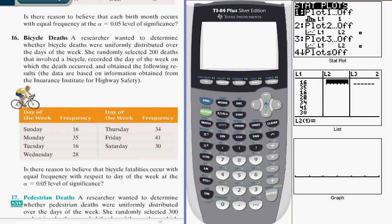I'm going to be looking at problem 16 on page 561. In the goodness-of-fit test, we have a set of data, and we expect that data to fit a certain distribution, but our sample data suggests otherwise. Now, in this problem, a researcher wants to determine if bicycle deaths are uniformly distributed over the days of the week, and she selects 200 deaths that involve a bicycle and records the day of the week that the deaths occurred on.